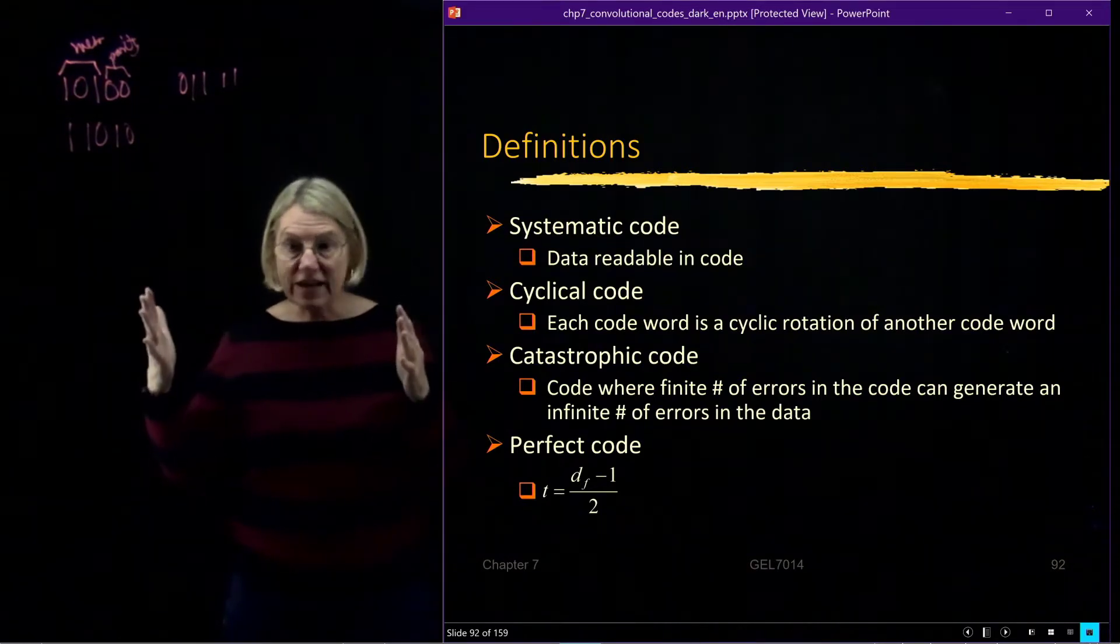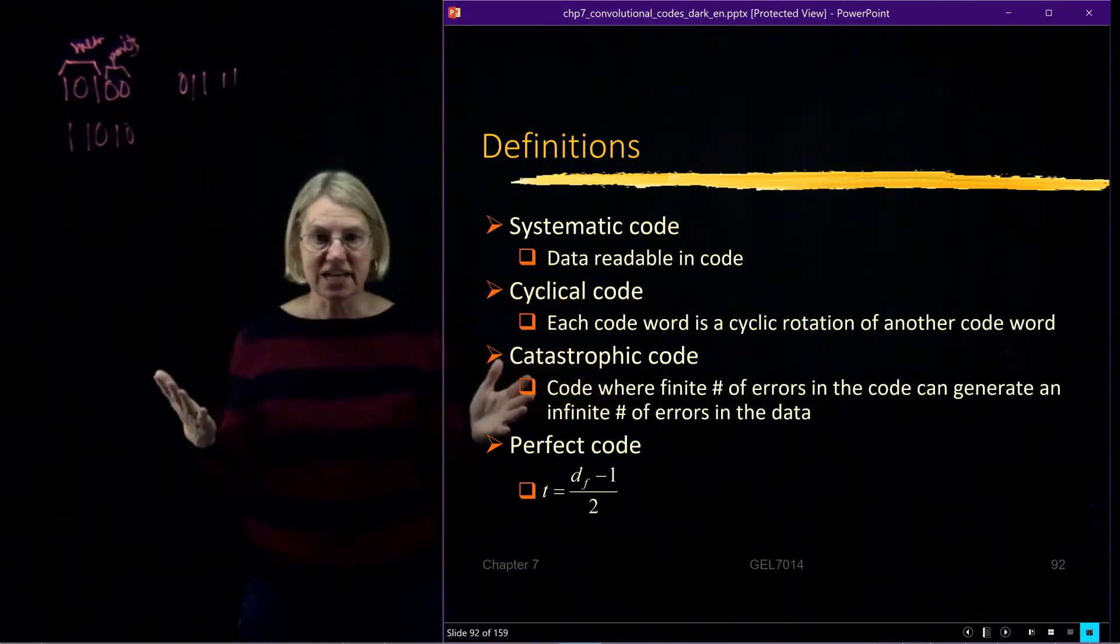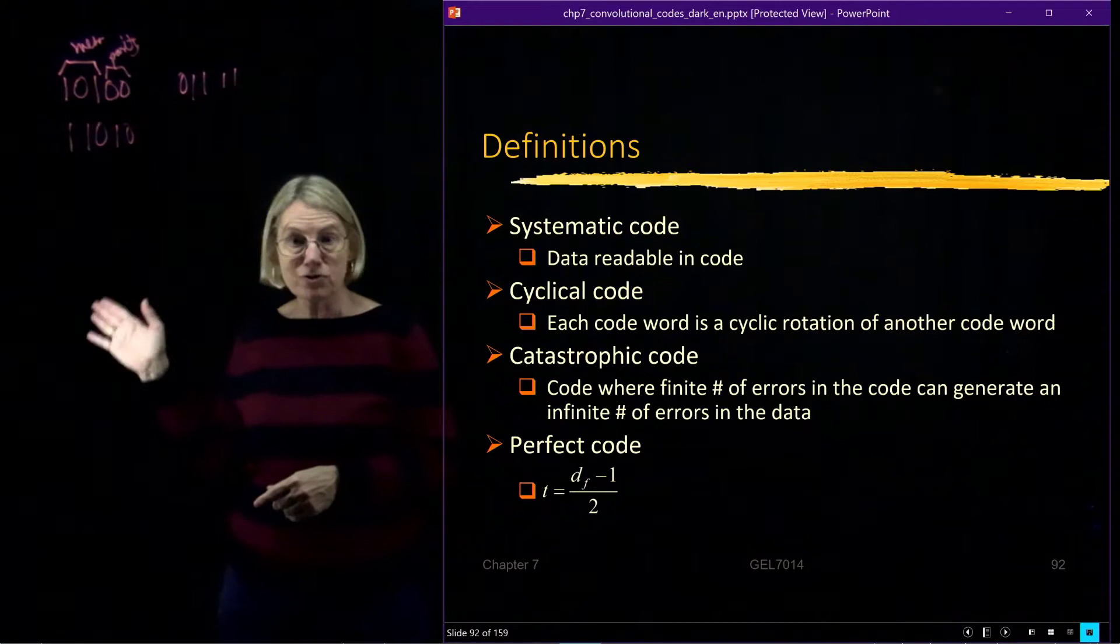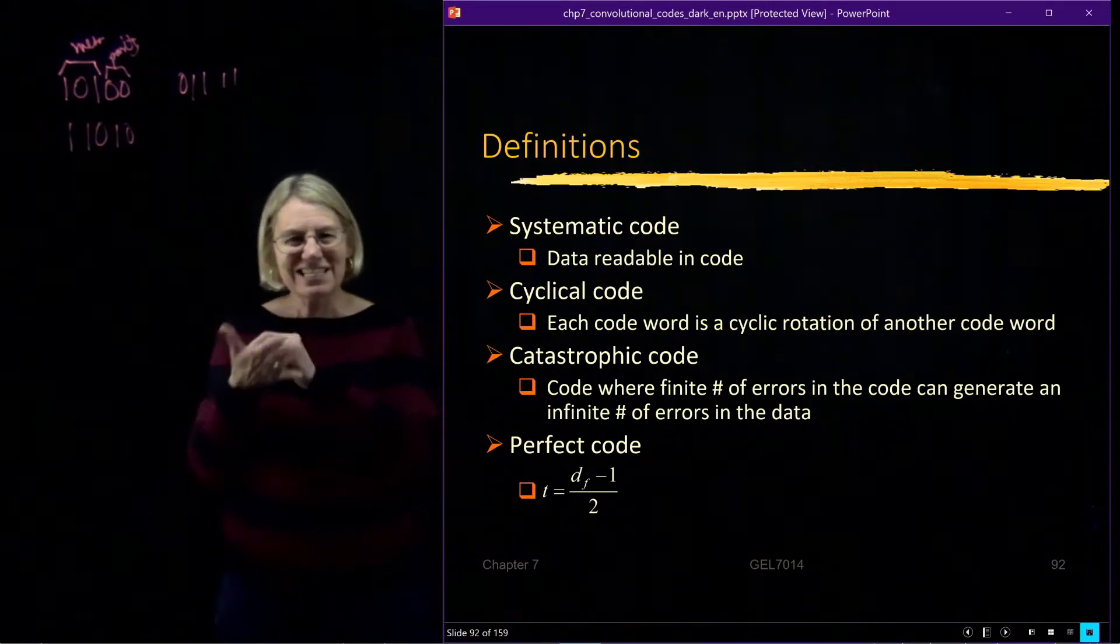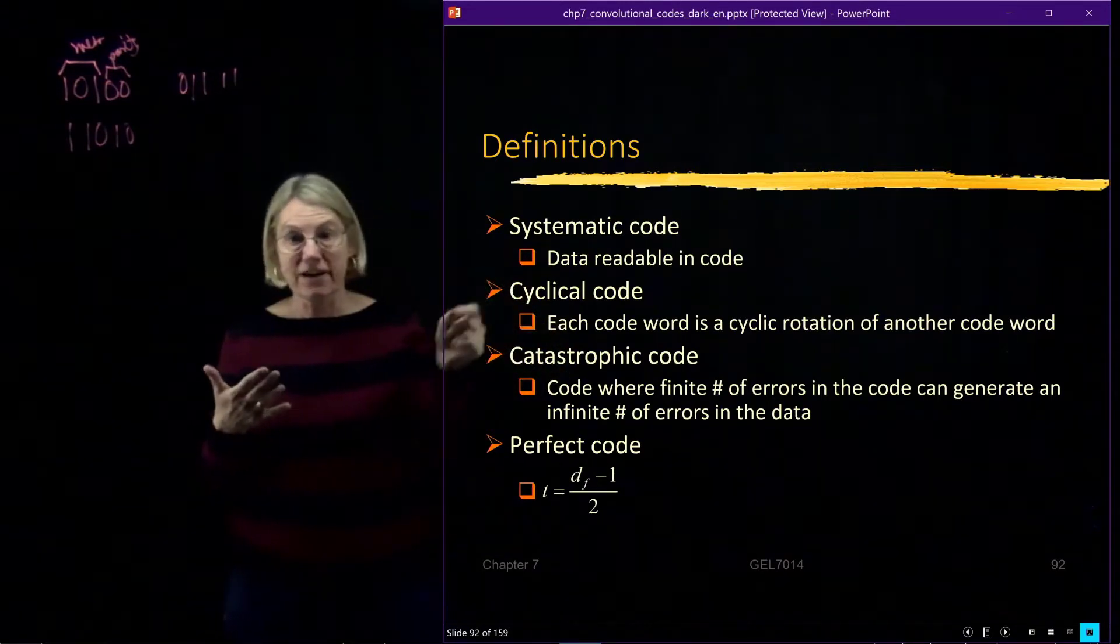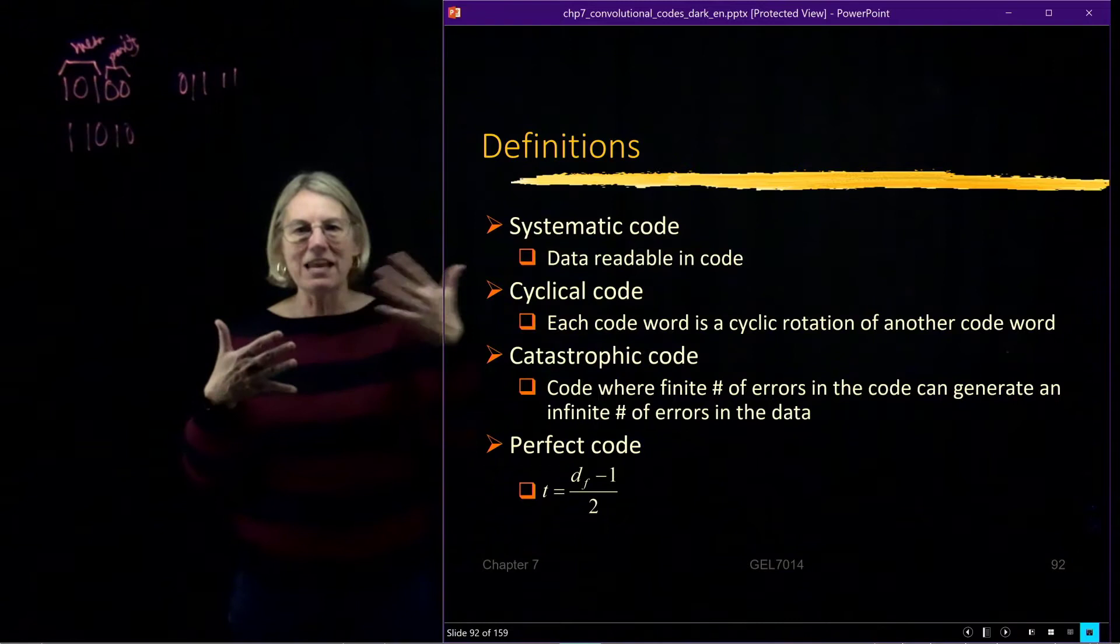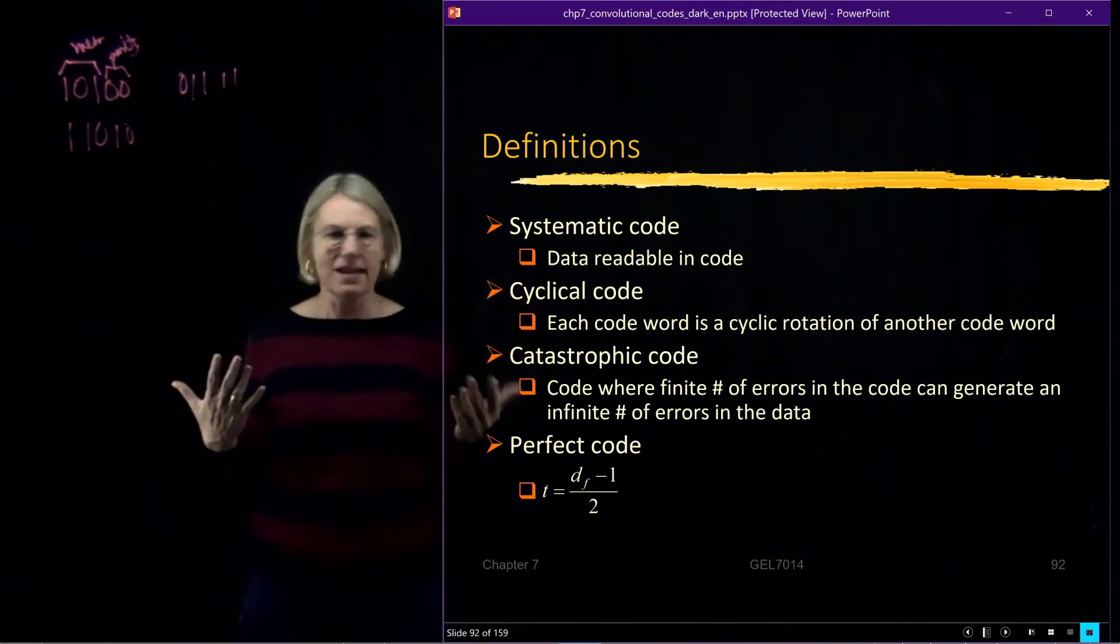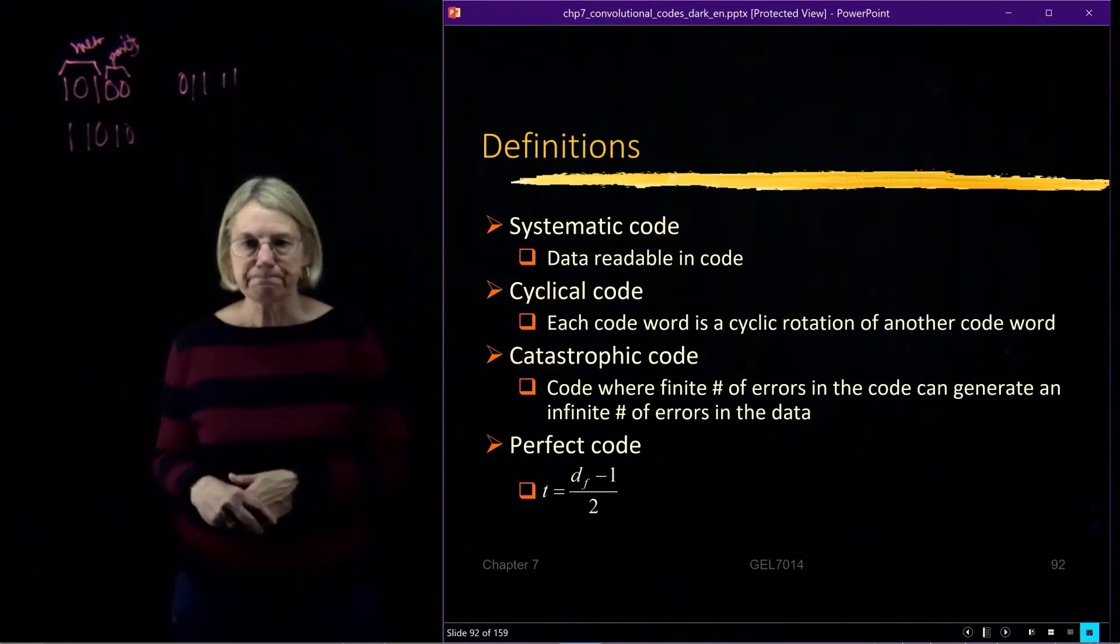and trying to find out for a given constraint length, what is the best code I can get? What is the largest free distance I can get? Well, one way you can do this is numerically, and we can look for catastrophic codes, throw those out right away. Because what is a catastrophic code? A catastrophic code is one where I have just a few errors in the path, a finite number of errors, a countable number of errors, but somehow when I put it through my decoder, it generates an infinite number of errors. Like once I get that many errors, I never, my decoder never resynchronizes. It can never catch back up. So catastrophic codes are catastrophic, and so we avoid those.